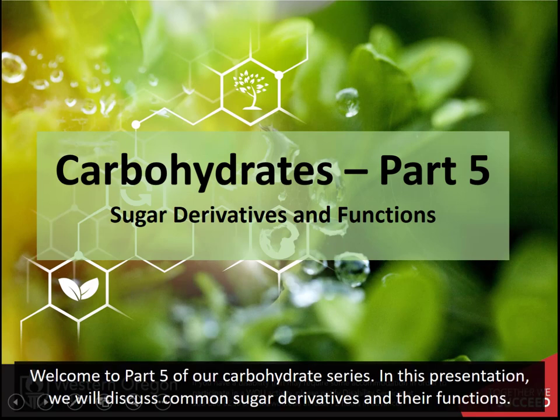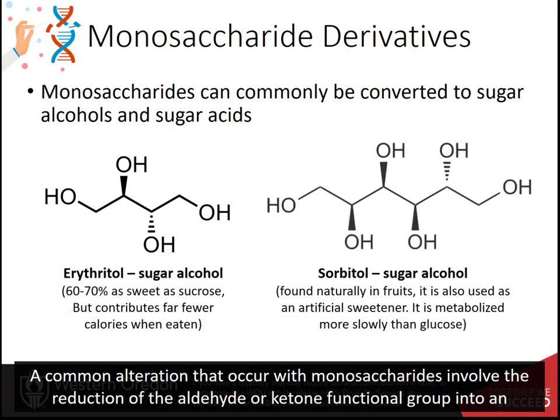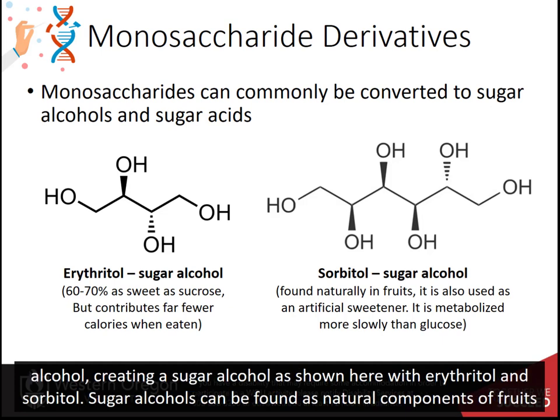Welcome to part 5 of our carbohydrate series. In this presentation, we will discuss common sugar derivatives and their functions. A common alteration that occurs with monosaccharides involves the reduction of the aldehyde or ketone functional group into an alcohol, creating a sugar alcohol, as shown here with erythritol and sorbitol.